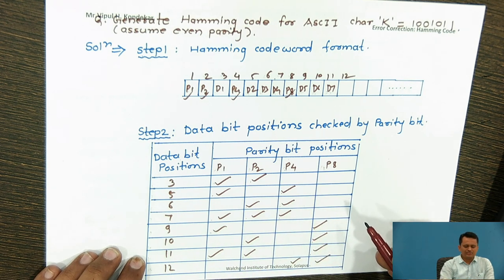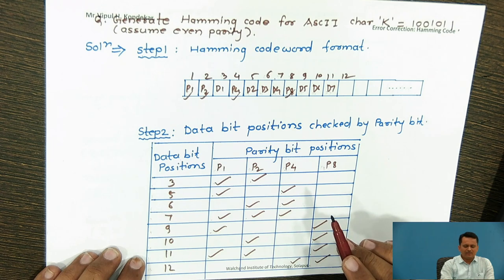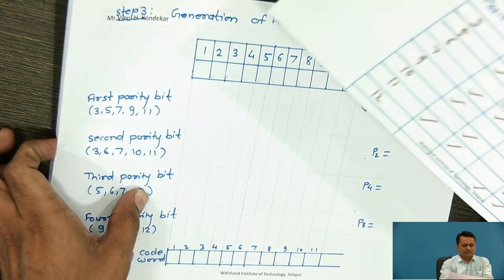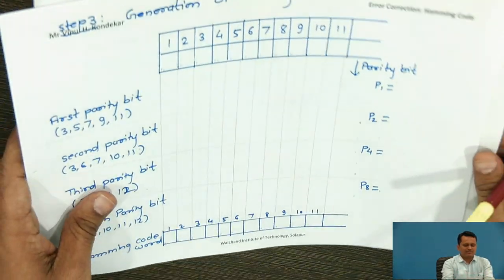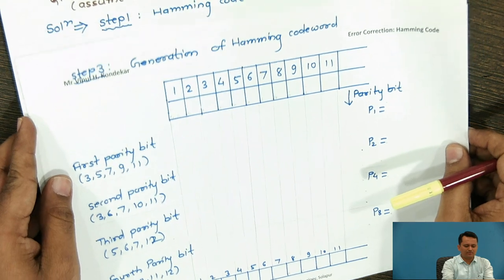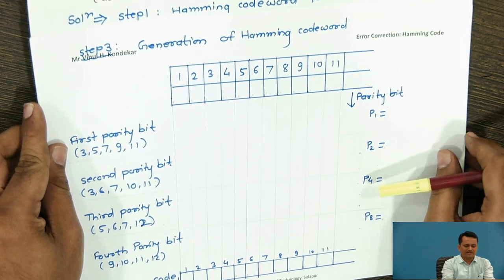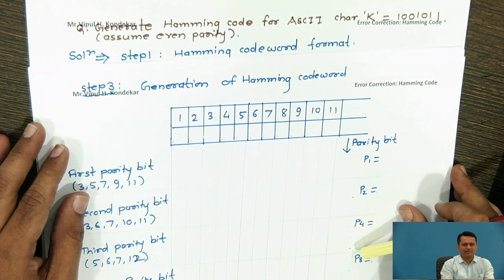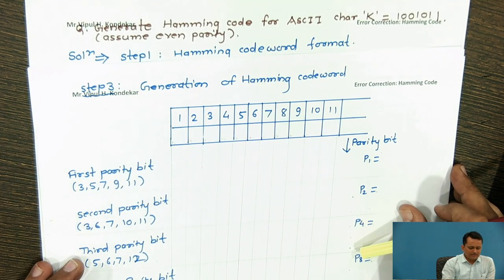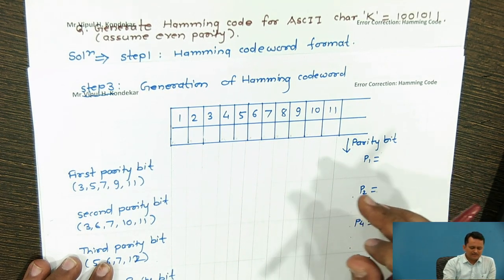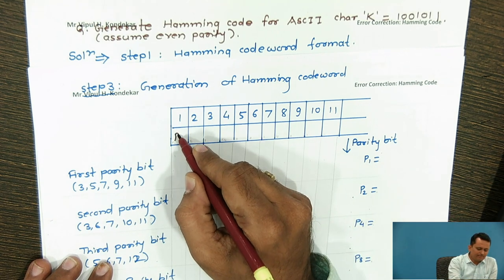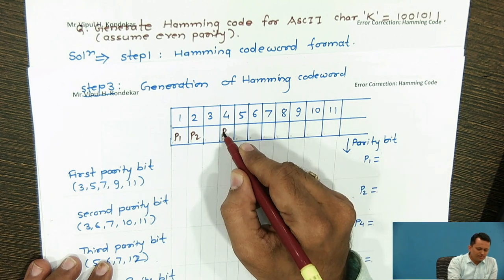That completes step two, which is common for all Hamming data words. Now we move to step three: generation of the actual Hamming code. We again consider the format — parity bit P1, then P2, then P4, then P8 — followed by the remaining data bit locations.